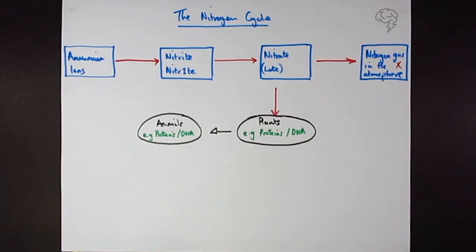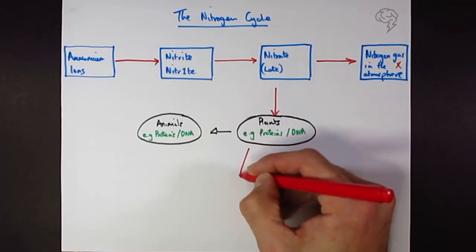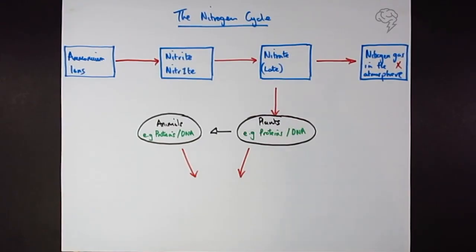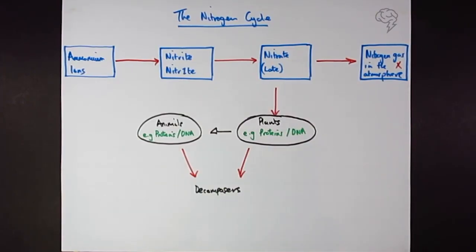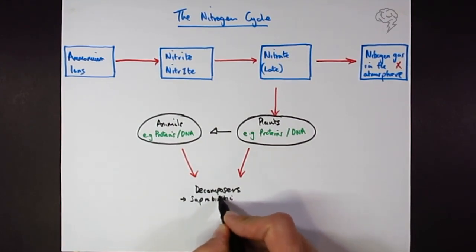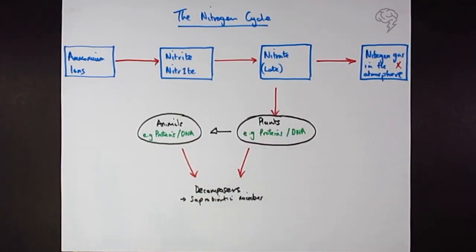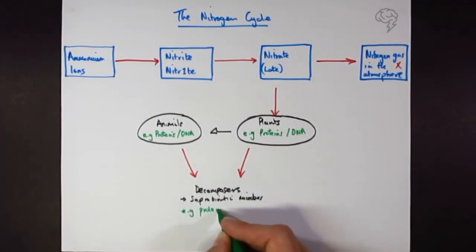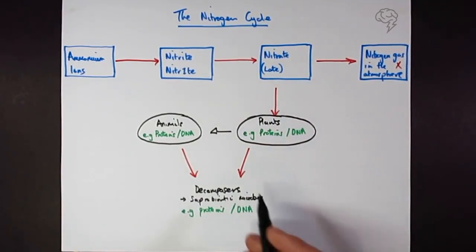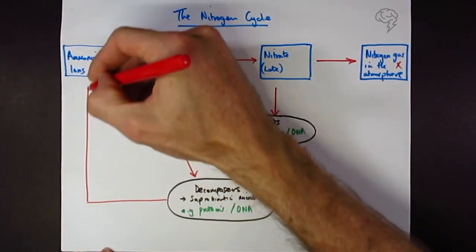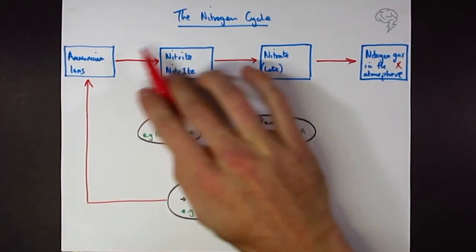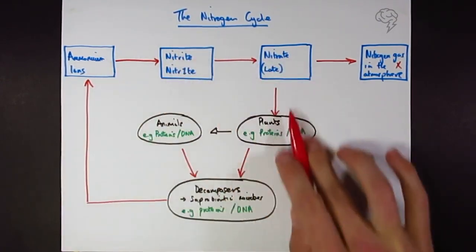What happens to the nitrogen compounds from animals and plants when they die, or when they excrete? They are broken down by decomposers — also called saprobionts or saprobiontic bacteria and microorganisms. These decomposers also have their nitrogenous compounds in proteins and DNA, and since they're living, they go in a round bubble too. From here we go back to ammonium, completing the cycle.